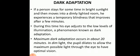In dark adaptation, if a person stays in bright sunlight and then moves to a dark or dimly lit room, for some time they do not see anything — a temporary blindness occurs. After some time, vision comes back and they can see even in very dim light. During this time the eye is adjusting to the low levels of illumination — this is called dark adaptation. Maximum dark adaptation occurs in about 20 minutes. In dim light, the pupil dilates to allow maximum possible light through the eye.